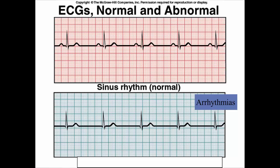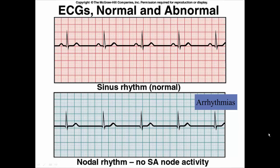A normal ECG is called a normal sinus rhythm, showing a nice P, Q, R, S, T wave in each cycle. Any time something is wrong with the ECG, that indicates an arrhythmia — something wrong with the conduction system, action potentials, or electrical activity of the heart. Looking at one example arrhythmia: notice there's something missing — the P wave is missing. This is indicative of no SA node activity; the SA node simply isn't working.